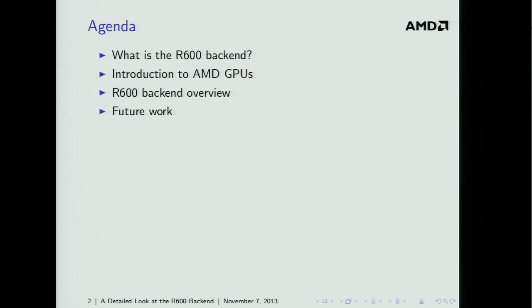I'm going to start out with a brief overview: what is the backend, how do we use it. Then I'll give a brief introduction to GPU architectures and specifically the GPUs we have at AMD. Then we'll take a look at some of the features and interesting quirks of the backend. I've picked out the most interesting parts. At the end, I'll talk about some future work and things I may be working on in the future.